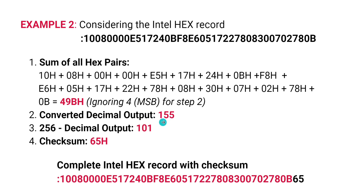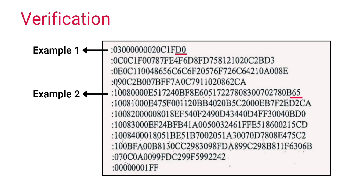When 9B is converted to decimal, the result is 155. The third step is again the same: we subtract the decimal output from 256, which results in 101. Finally, to obtain the checksum, this decimal output is converted to hexadecimal, giving us 65H. Appending 65 to the rest of the hexadecimal digits in the Intel hex record gives us the complete hex record.